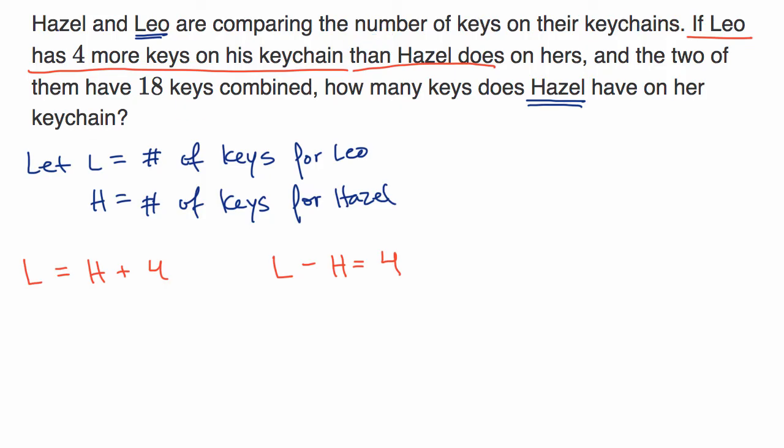What about that second constraint? The two of them have 18 keys combined. Well that just means L + H = 18. Obviously there are other ways you could mathematically write this that would be equivalent.